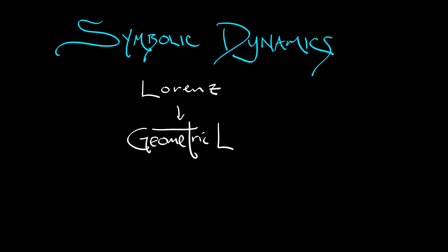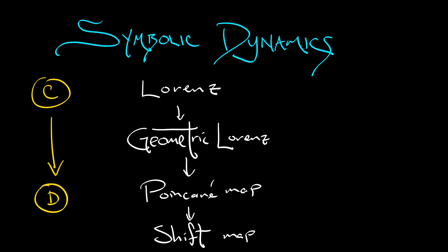We started off in continuous time with the Lorentz equations to try to model something about what's happening in the atmosphere by reducing that down to a geometric version, taking a Poincaré map, and then converting everything into symbol sequences with a shift map. We've gone from continuous to discrete time. And that last step where we're working with strings of symbol sequences is just perfect and allows us to see what is really happening inside this system. That is our story arc.